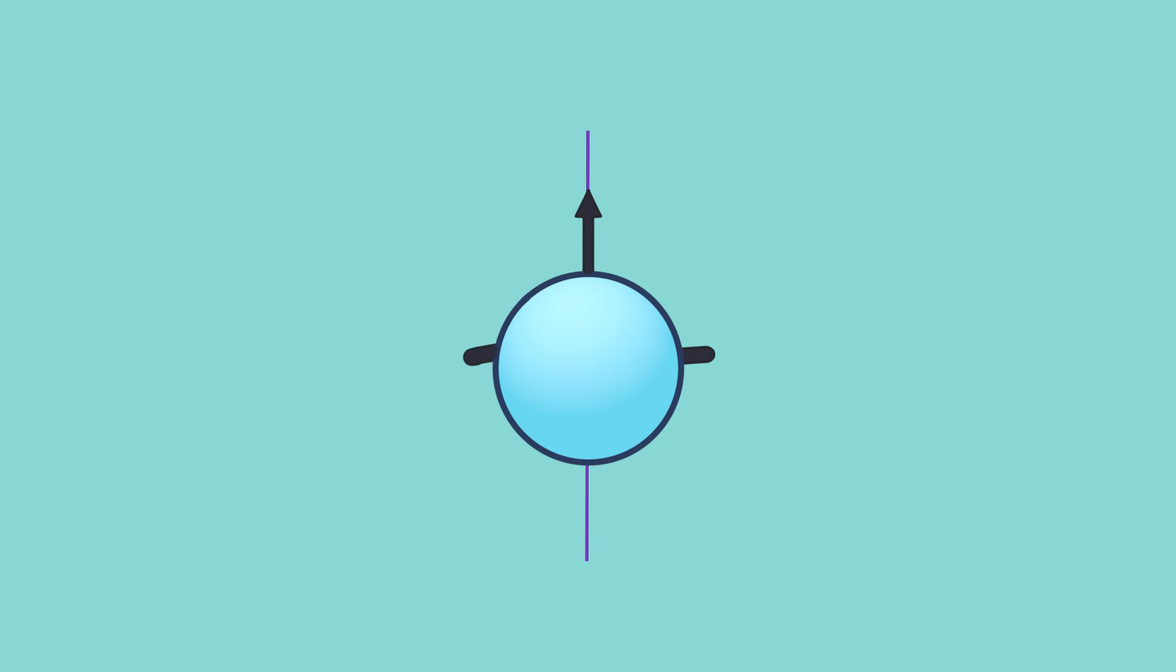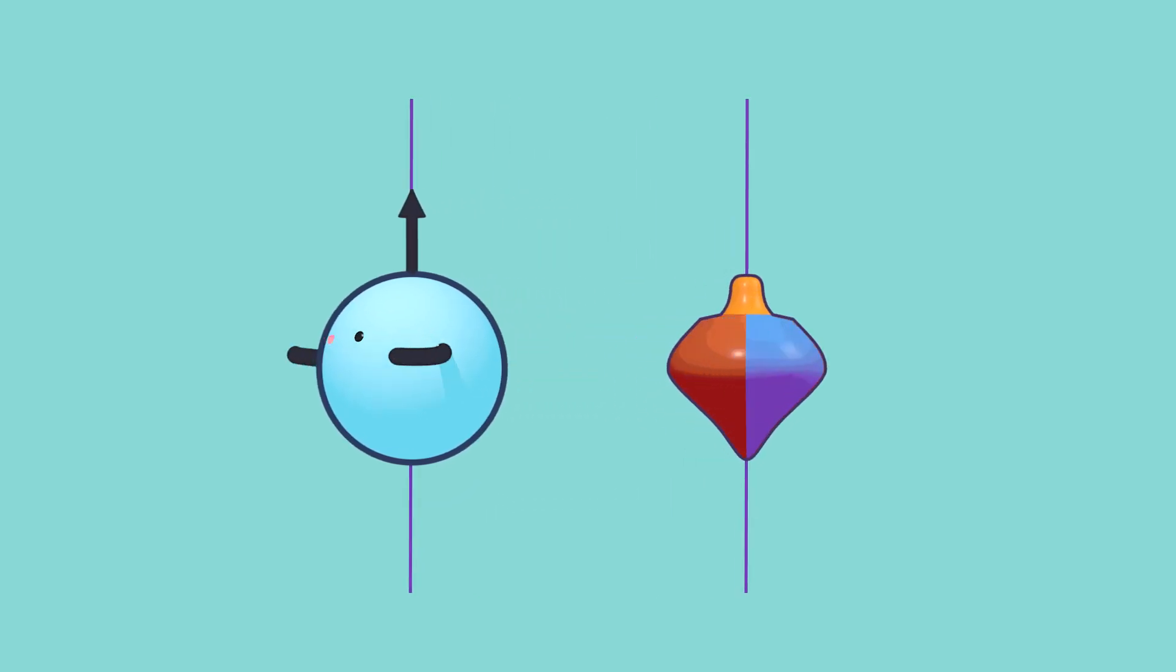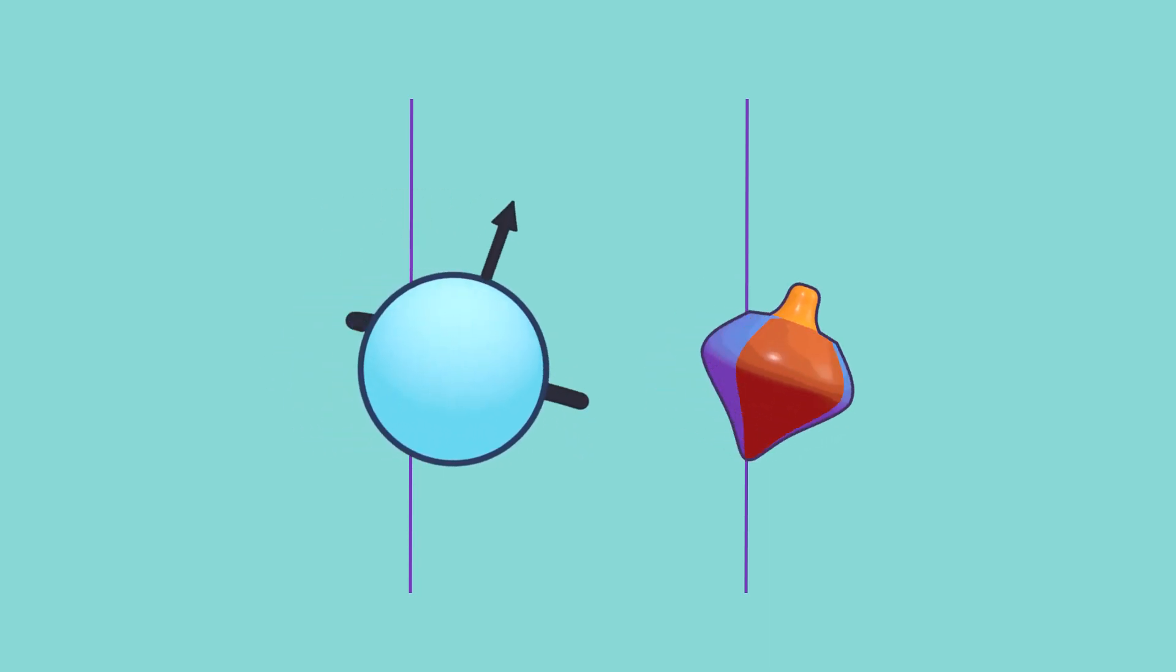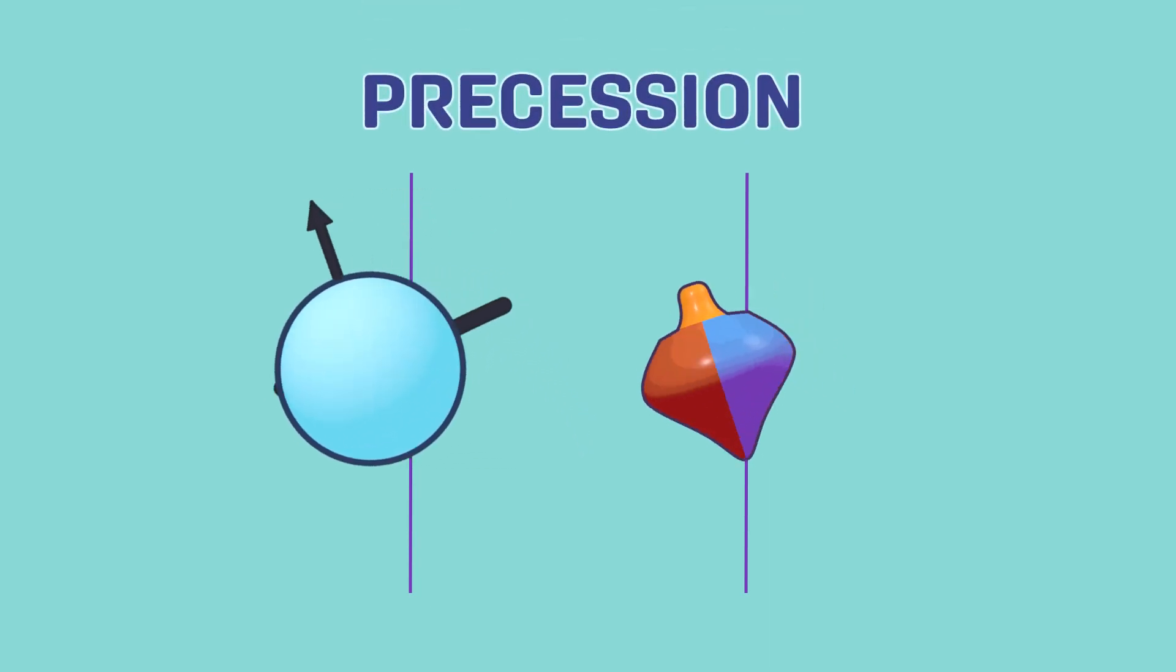In addition to aligning with the magnetic field produced by the MRI scanner, the protons in your body are also spinning along their axes like little tops or globes. This is called precession, or nuclear spin.